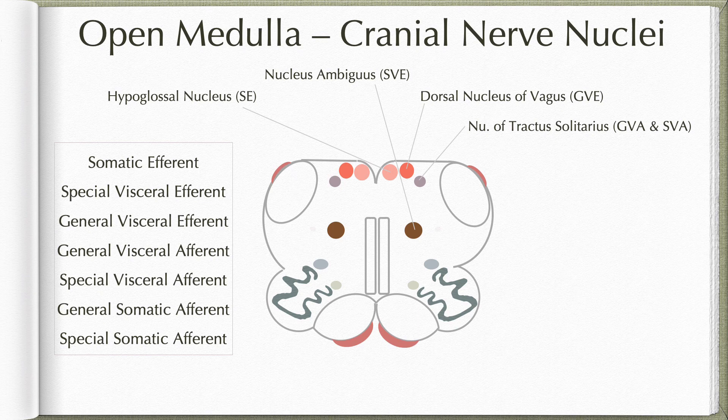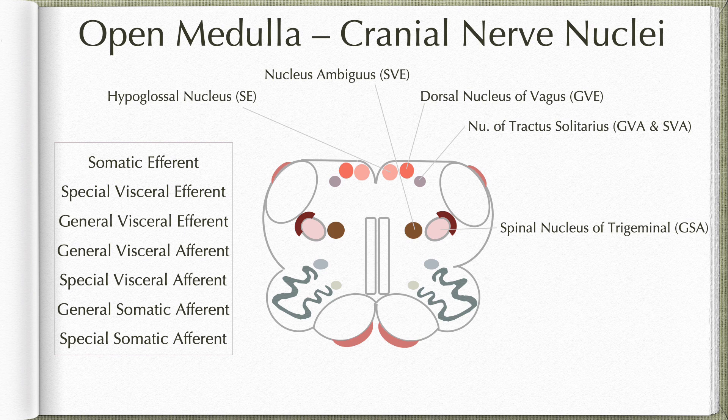Then we have the general somatic afferent column, represented by the spinal nucleus of the trigeminal. We are also showing the spinal tract of the trigeminal. In the lower levels, the spinal nucleus and the tract are superficially located on the lateral aspect of the medulla oblongata. But at the upper open medulla level, because of the presence of the inferior cerebellar peduncles, this nucleus is further displaced to the deeper planes.